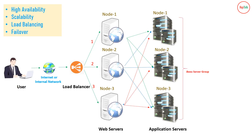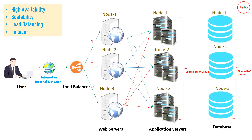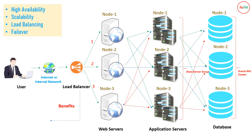So you have three servers within the JBoss server group. In the backend you also have a cluster of multiple database instances running for high availability — for Oracle this would be a RAC (Real Application Cluster). Similarly, any of your application server nodes can send a request to any of the database instance nodes for high availability, load balancing, and failover. This is the highly available architecture.